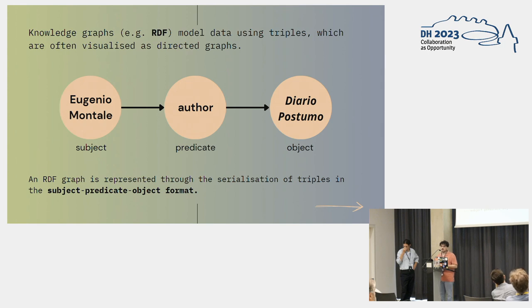So if you are not so much knowledgeable of RDF graphs, this is the kind of structure we are dealing with: the subject, predicate, object kind of triple. So we have, for example, in this case, the author Eugenio Montale, who is the author of the Aero Postumo. And this is the basic structure we often see in knowledge graphs.